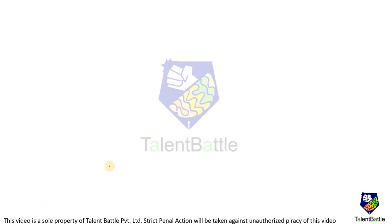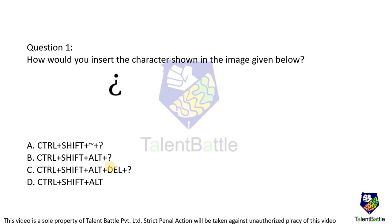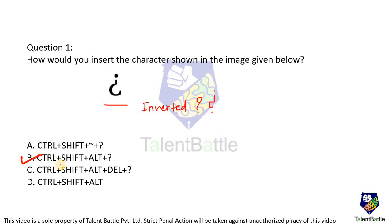The first question is: how would you insert the character shown in the image below? It is an inverted question mark. Normally this question mark is utilized for punctuation work in front of sentences or clauses, and we have to achieve this on our screen. You have to use the command Control+Shift+Alt and the actual question mark. So option B — Control+Shift+Alt+? — is the correct sequence for this respective key.